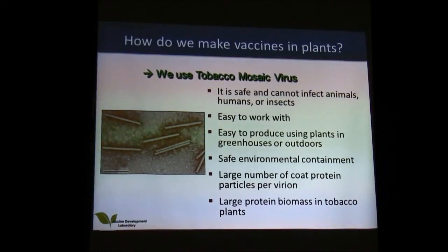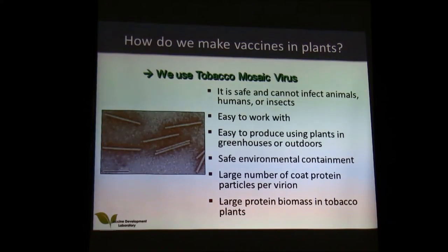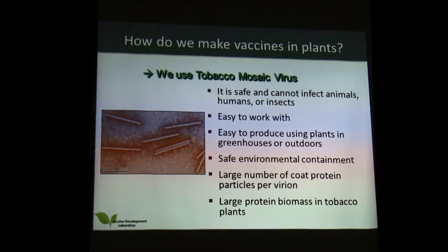We asked ourselves how we would do this. We use tobacco mosaic virus as a vehicle to bring disease antigens or epitopes of these antigens into the plants. It's safe as it cannot infect animals and it's easy to work with. Tobacco mosaic virus is the first virus to ever be sequenced, so a great deal is known about it and it's easy to manipulate.